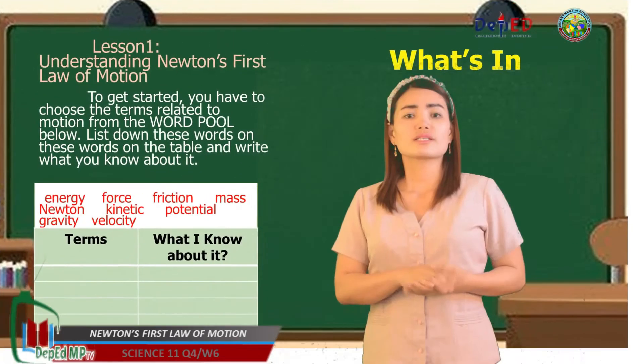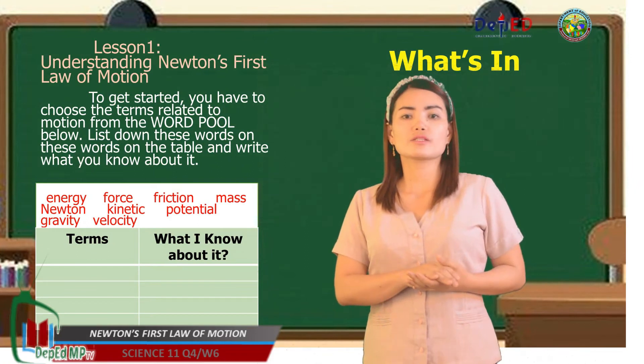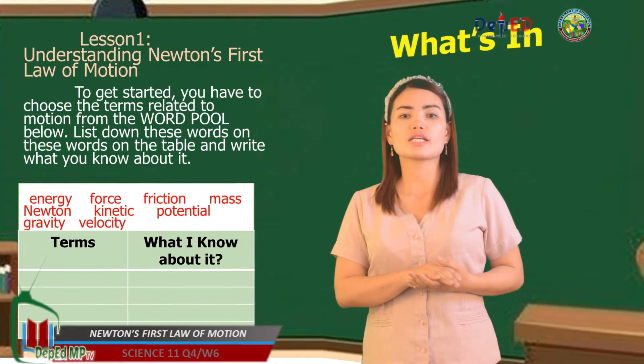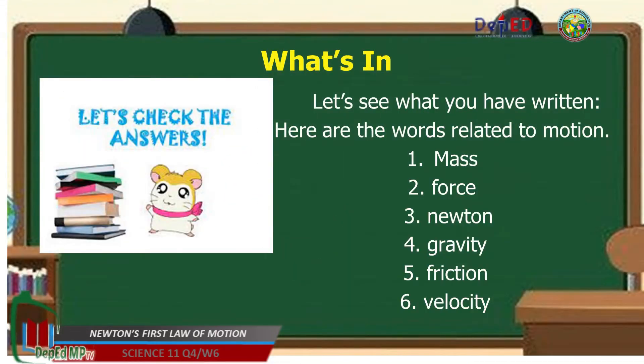To get started, you have to choose the terms related to motion from the word pool. Please dump these words on the table and write what you know about it. Kindly turn your self-learning module to page 5. Let's see what you have written. Here are the words related to motion: Number 1 Mass, Number 2 Force, Number 3 Newton, Number 4 Gravity, Number 5 Friction, Number 6 Velocity.